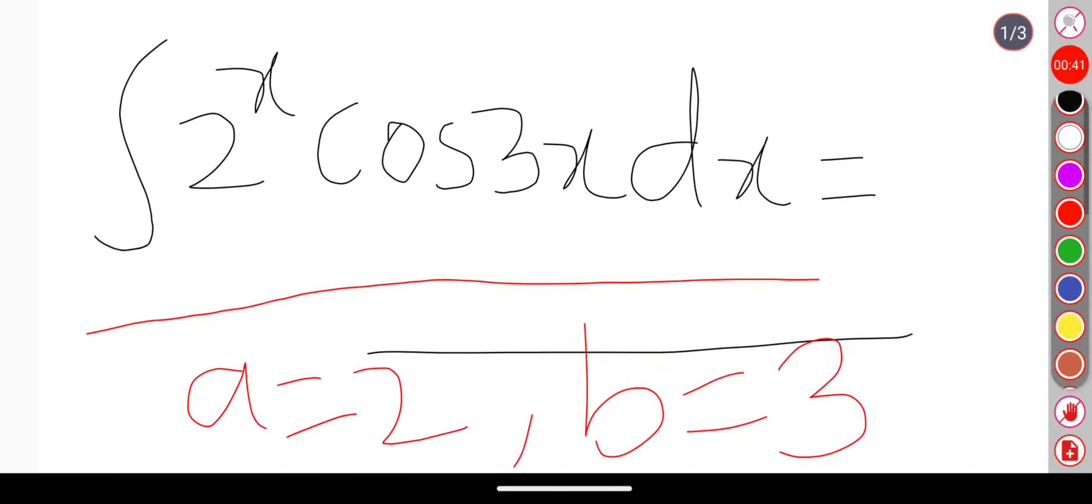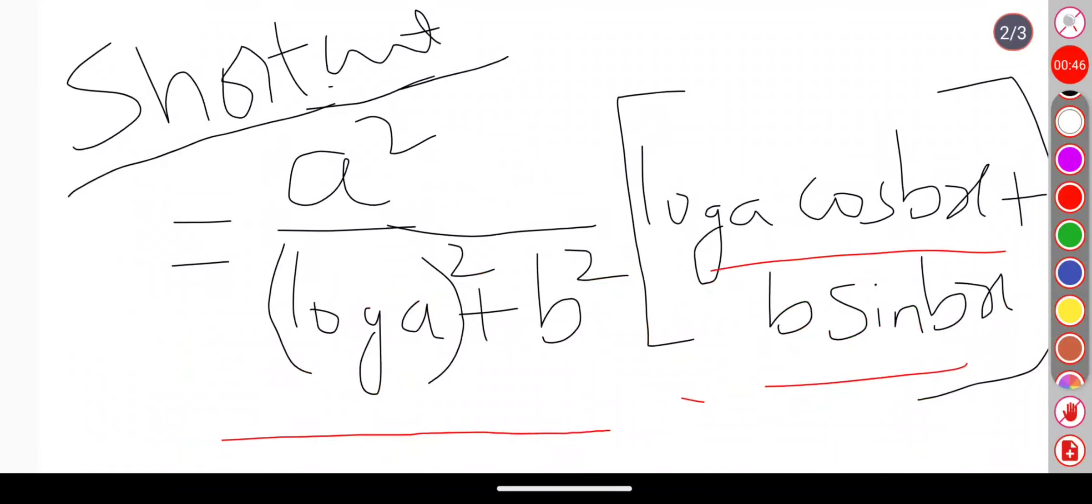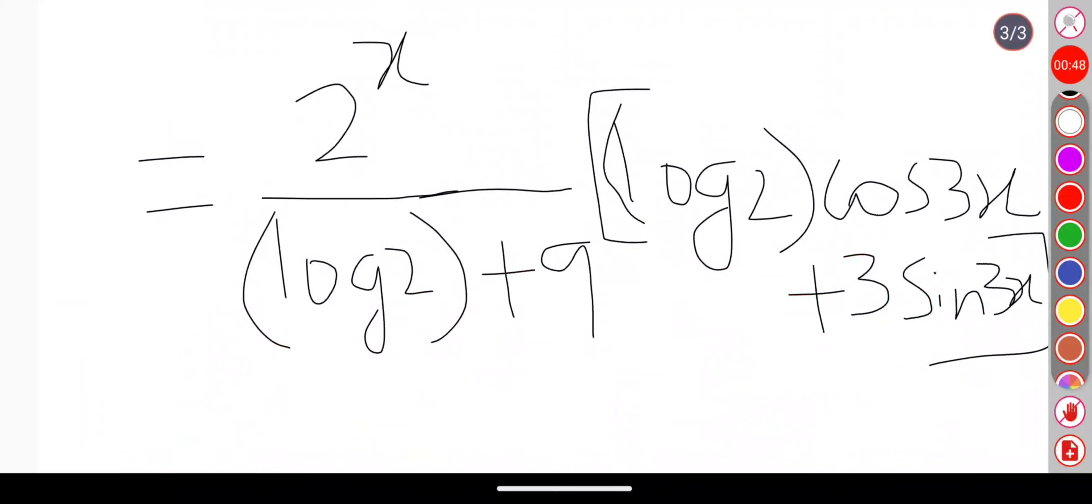Once we got a and b values, my next task is to substitute these a and b values in my shortcut. So I am substituting those a and b values in the shortcut.